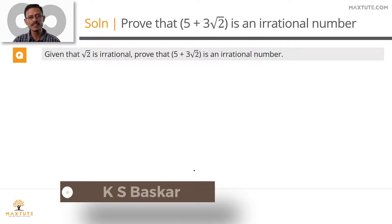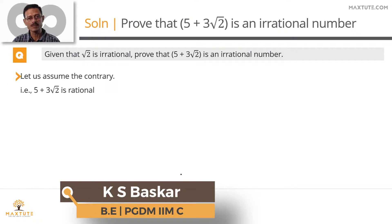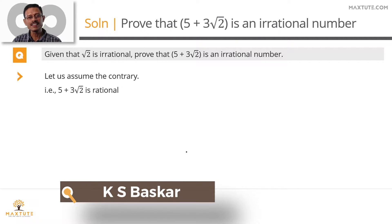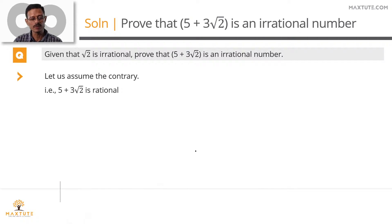How are we going to go about doing this? We are going to assume the contrary — that 5 plus 3 root 2 is rational — and then end up proving that that is not possible.